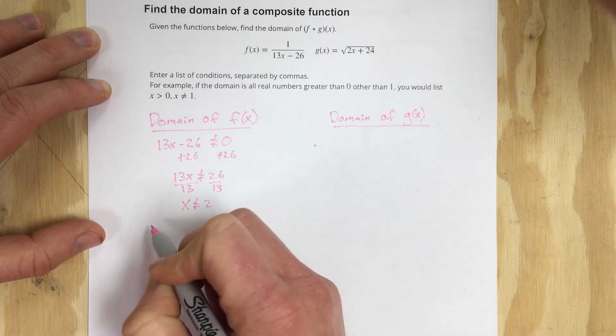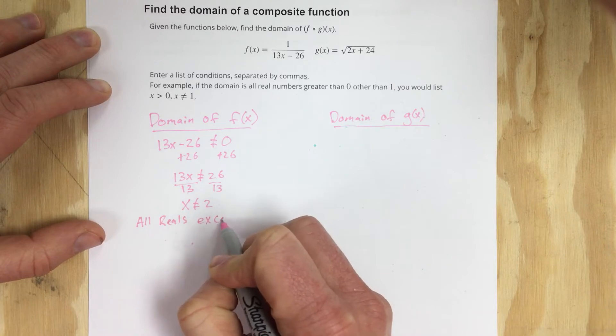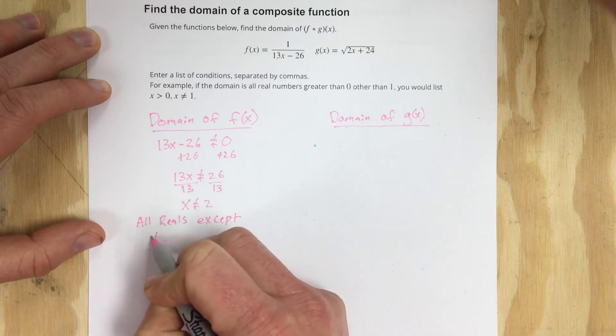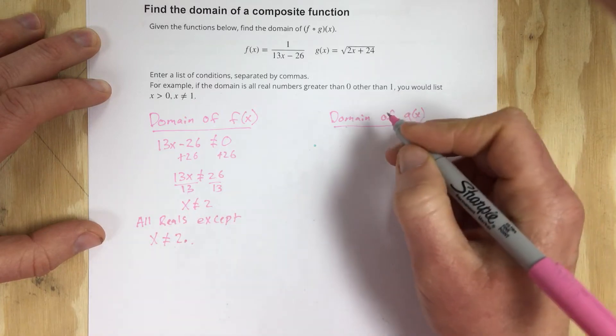So the domain would be all reals except x cannot equal 2. That's the domain of f of x.